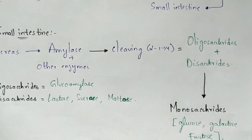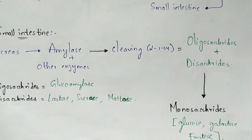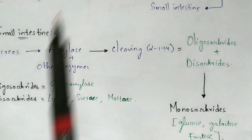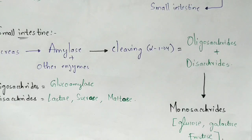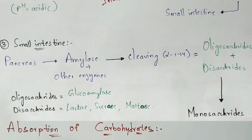These disaccharides finally get converted into monosaccharides, which include glucose, galactose, and fructose. In this way, the digestion of carbohydrates occurs in the mouth, stomach, and small intestine. Now let us learn about how the absorption of carbohydrates occurs.